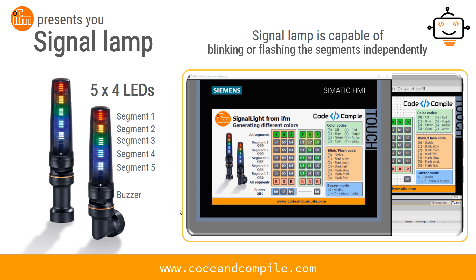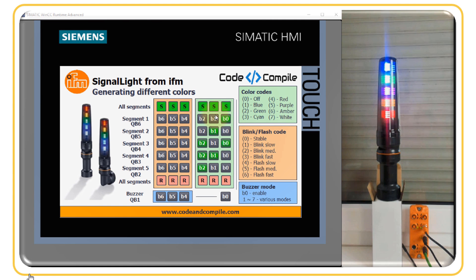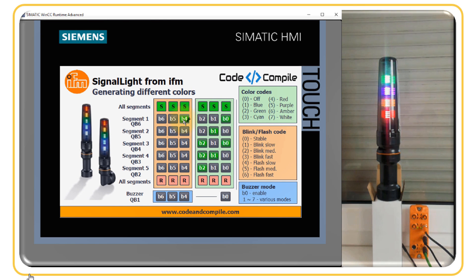The signal lamp is also capable of blinking or flashing segments independently. In this example we will see how to blink or flash colors. For segment one, various codes are defined in an orange area. When all bits are false, the value is zero and the light is stable — it will not blink.